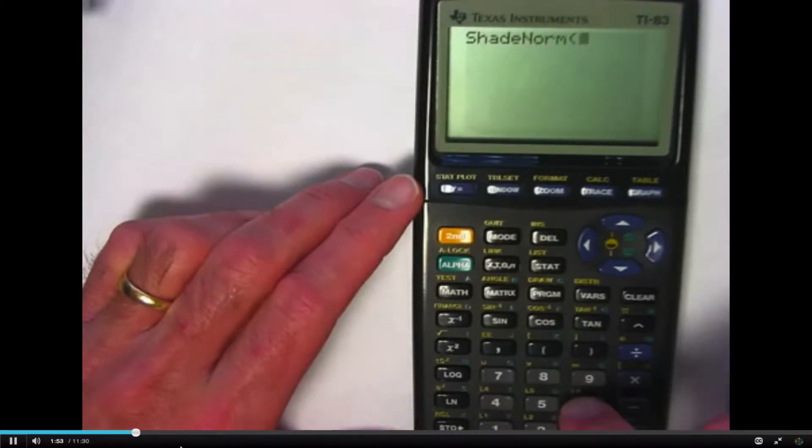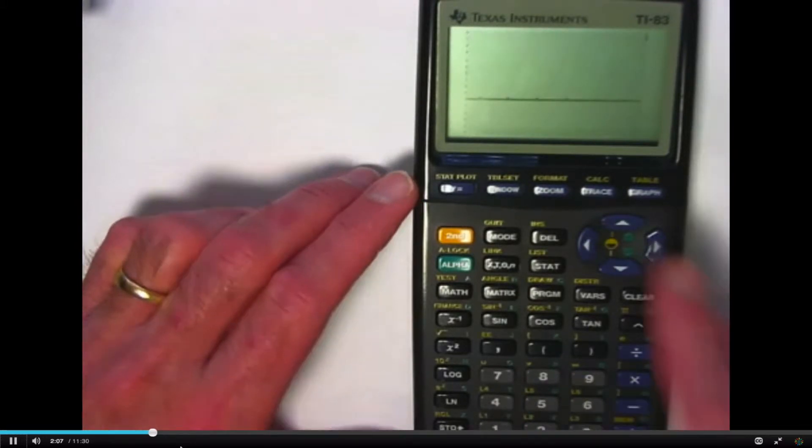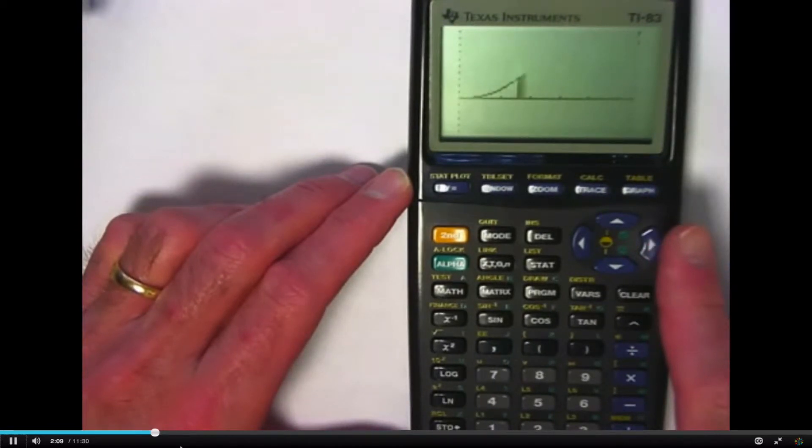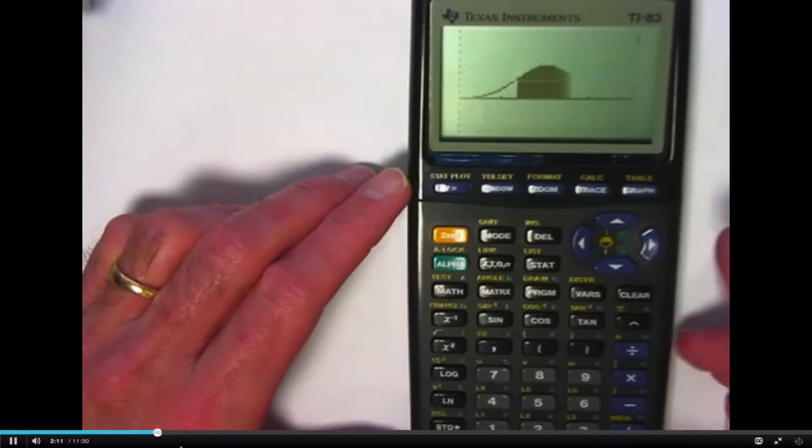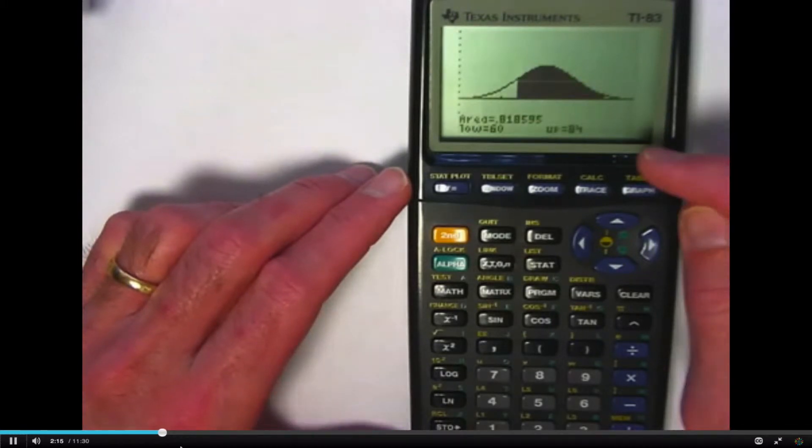I put the left endpoint, 60, comma, the right endpoint is 84, comma, the mean of the distribution, which was 68, comma, the standard deviation, which was 8. And we get a picture of what I drew by hand and a more accurate estimate of the area. Right there.